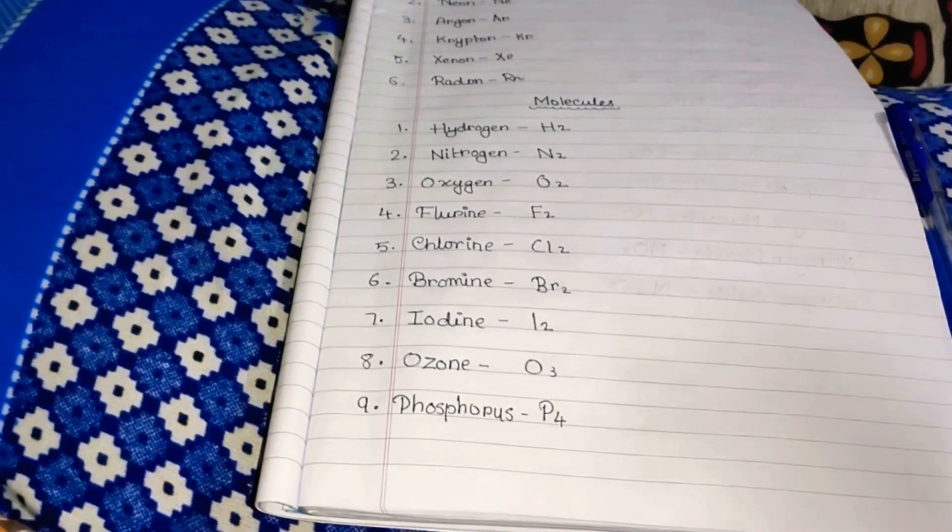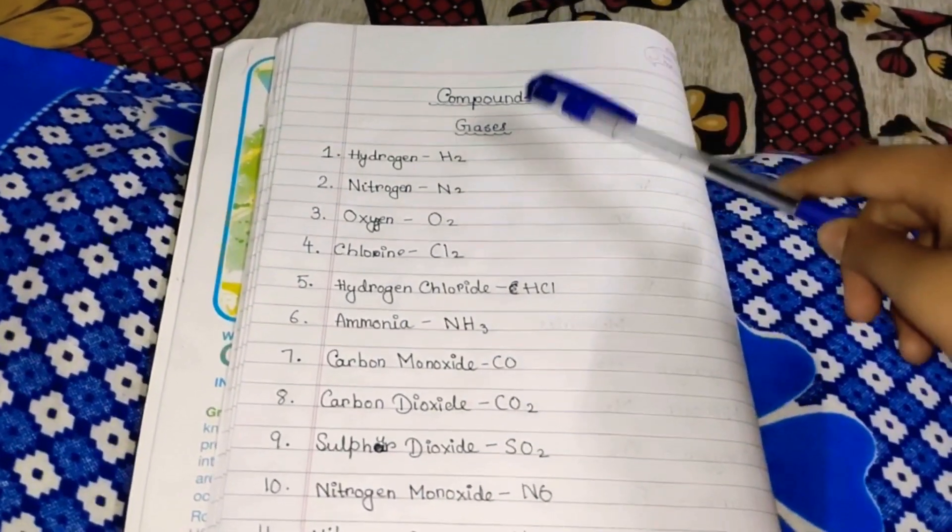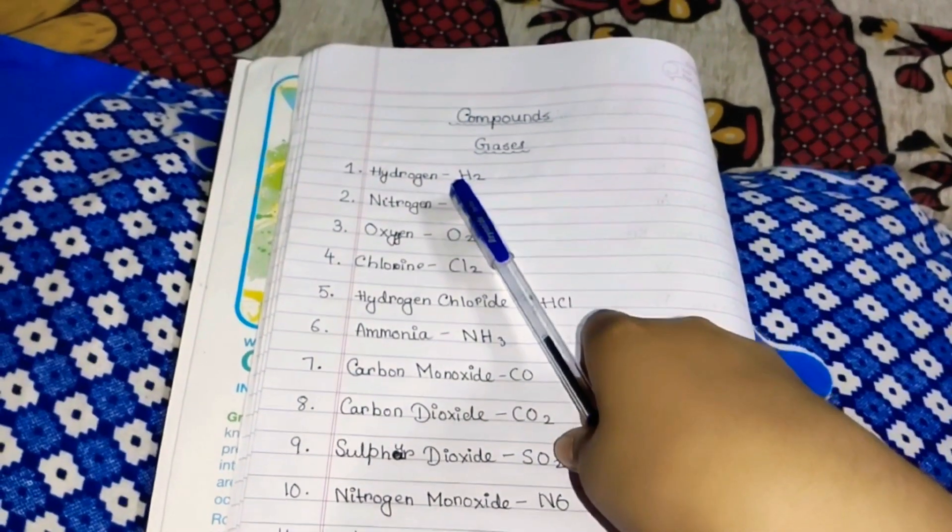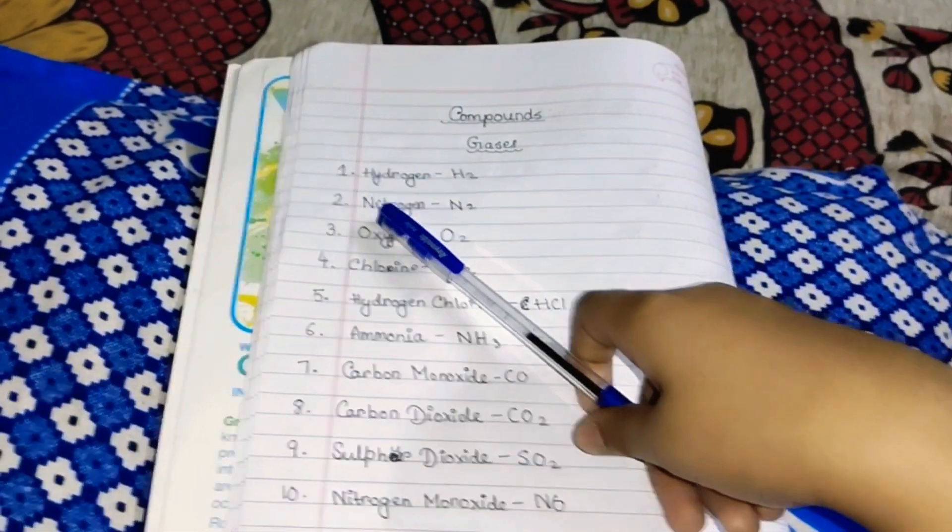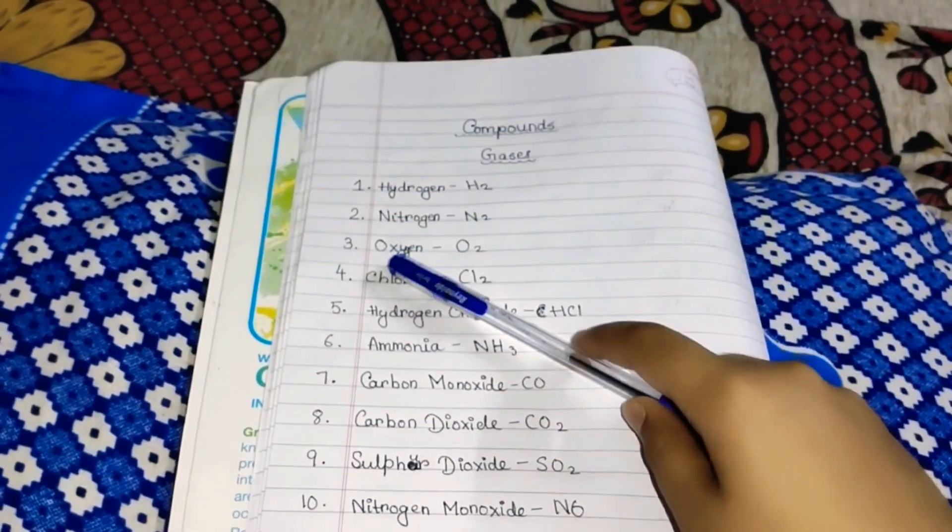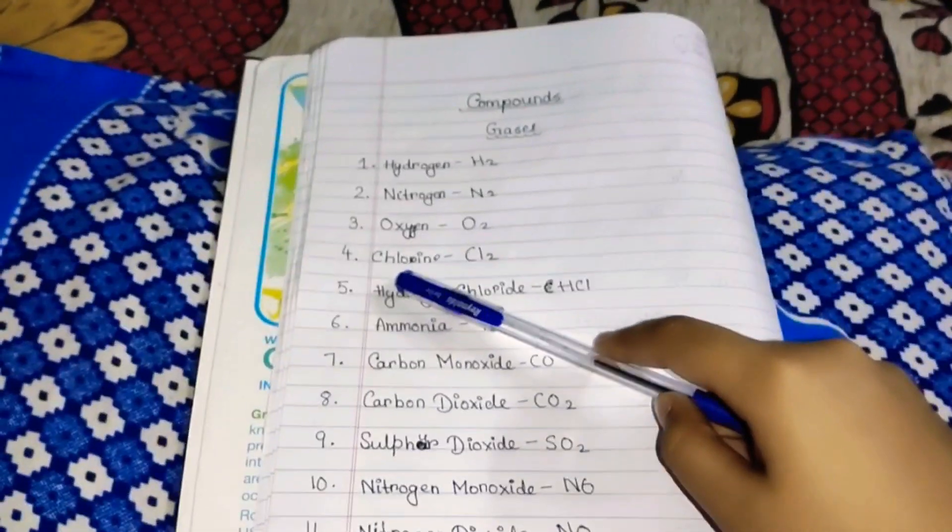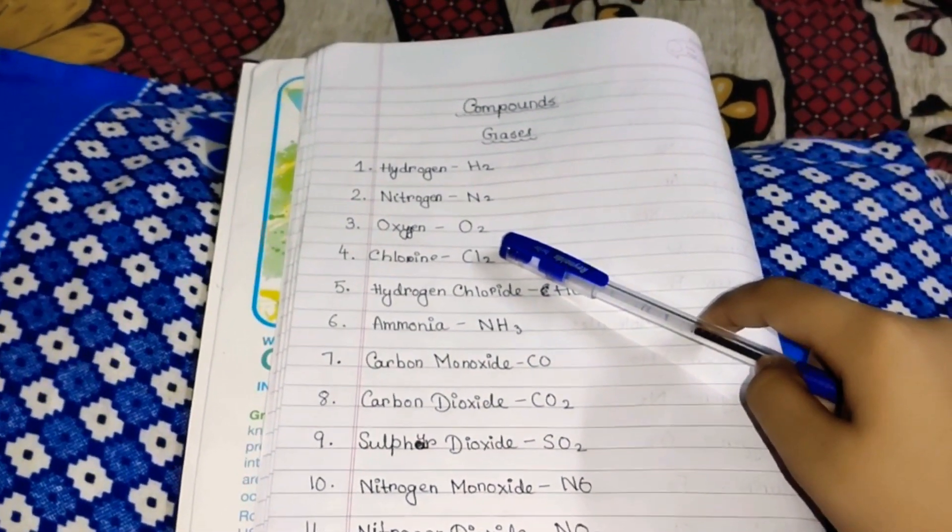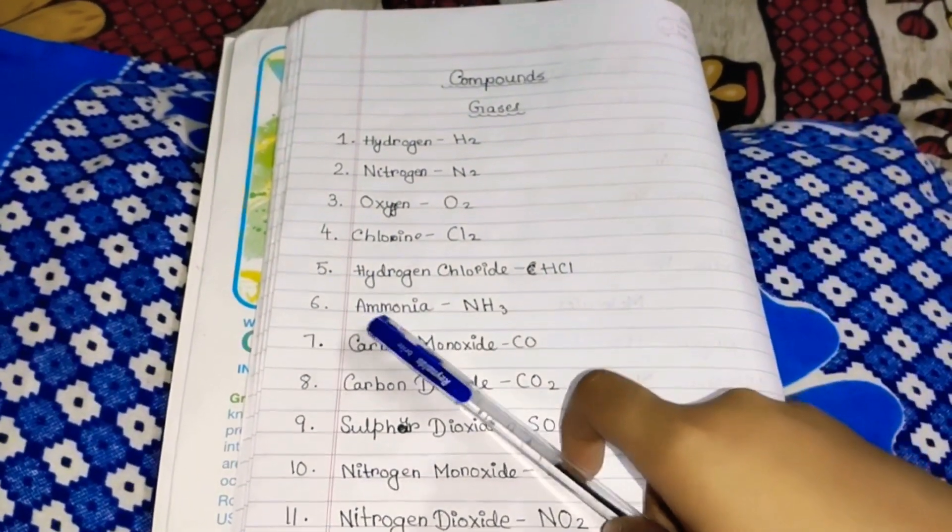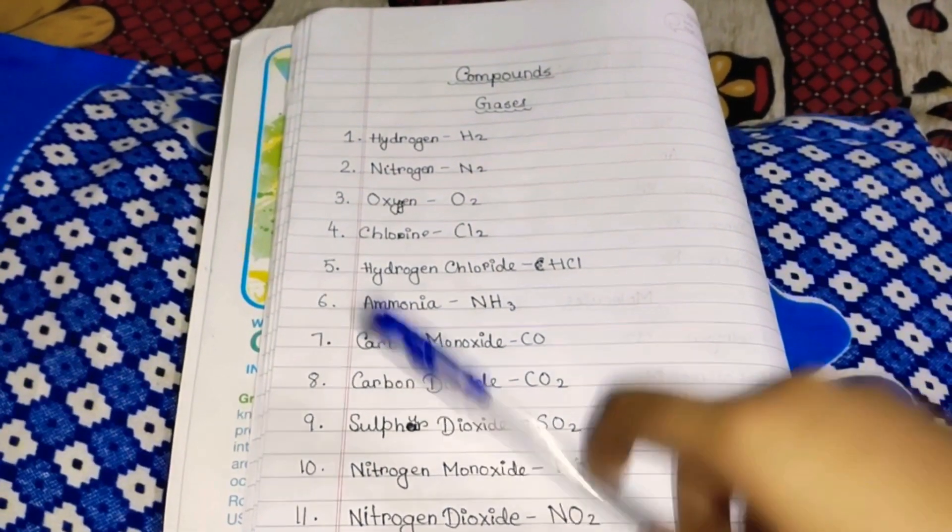Okay, now let us move to the compounds. Now we will learn about the compounds. First is gases. Number one, Hydrogen H2. Second, Nitrogen N2. Third, Oxygen O2. Chlorine Cl2. Fifth, Hydrogen Chloride HCl. Sixth, Ammonia NH3. Seventh, Carbon Monoxide CO.